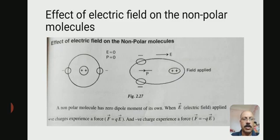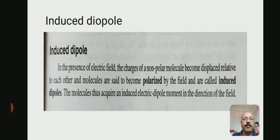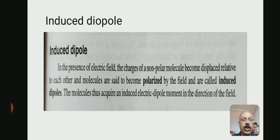Effect of electric field on non-polar molecules. Before electric field is applied, E = 0. When electric field is applied to the molecules, it will be arranged as shown in the figure. This non-polar molecule has zero dipole moment of its own. When electric field E is applied, positive charges experience a force F = QE, and negative charges experience a force in the opposite direction, F = −QE. This is the induced dipole. In the presence of an electric field, the charges of a non-polar molecule become displaced relative to each other, and molecules are said to become polarized by the field and are called induced dipoles.